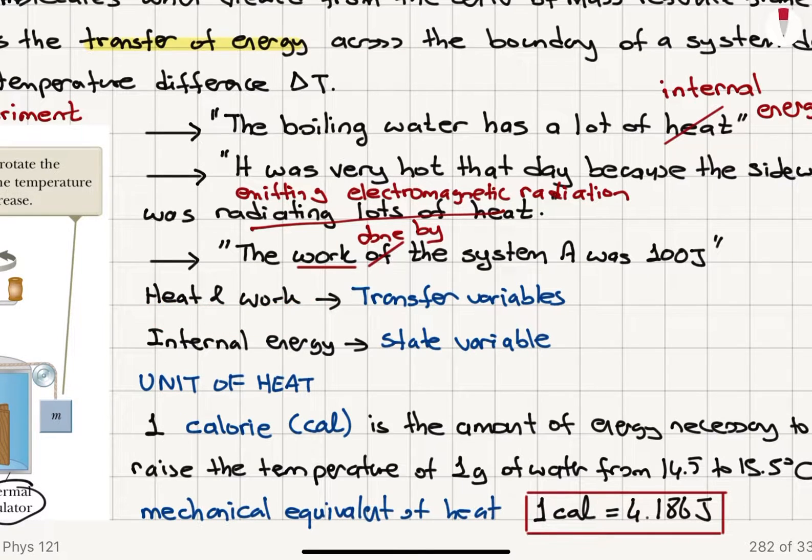So in summary, heat and work are transfer variables. In thermodynamics, they describe the transfer of energy, whereas internal energy is a state variable. It describes the total energy of the system.